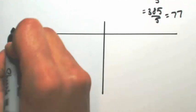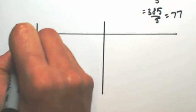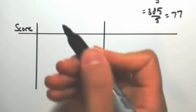So on the left side, we're going to put the score. In the next column, we're going to find the deviation.